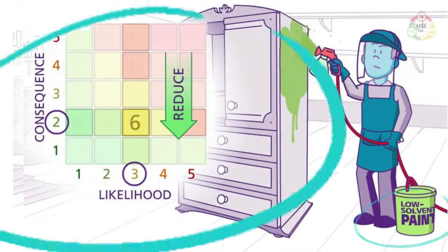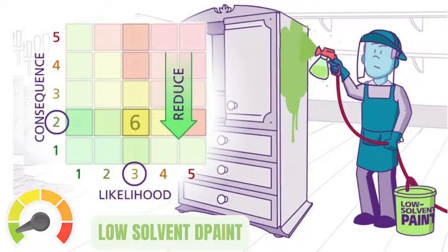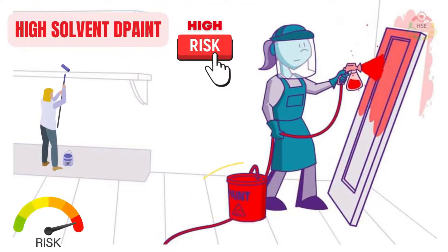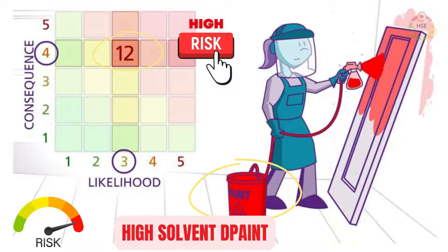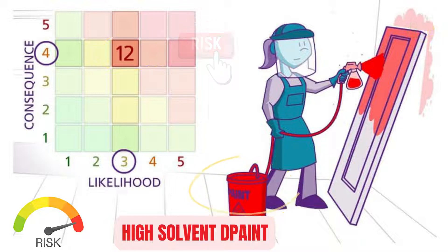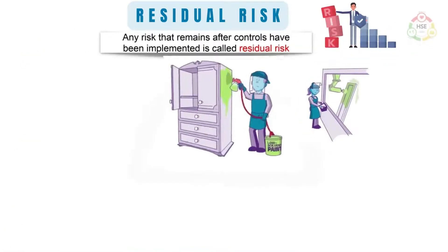But if we replace the paint with low-solvent paint, then risk will be reduced, as in this case consequences will be reduced. Similarly, another high-solvent paint is being used in a painting activity; the risk level of this activity is also on the higher side as consequences and likelihood are high. Now if we isolate the activity and reduce the exposure to the paint hazard, then the risk level will be reduced to acceptable, as in this case both likelihood and consequences will be reduced.